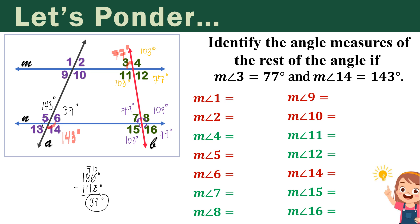For angle 13, that would be 37 degrees as well since it is a vertical angle with angle 6. Now for the upper portion: since 143 degrees is the corresponding angle of angle 5, then angle 1 is 143 degrees as well. Angle 1 is vertical with angle 10, so the measure of angle 10 is 143 degrees. You may also use alternate interior angles: since angle 5 is 143 degrees, angle 10 is 143 degrees as well since they are alternate interior angles.